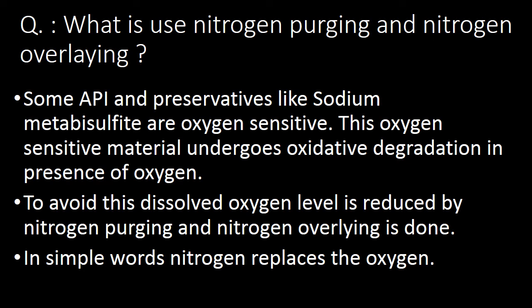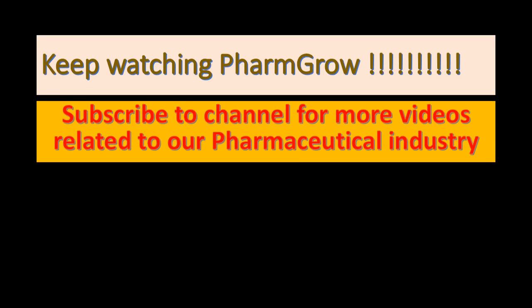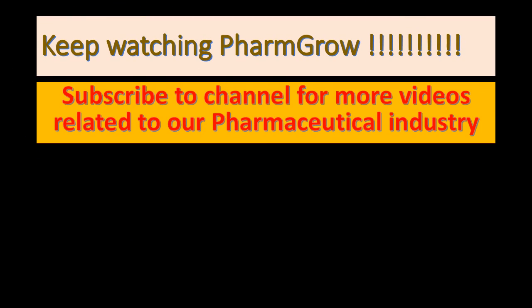What is the use of nitrogen purging and nitrogen overlaying? Some APIs and preservatives like sodium metabisulphite are oxygen-sensitive. These oxygen-sensitive materials undergo oxidative degradation in the presence of oxygen. To avoid this, dissolved oxygen level is reduced by nitrogen purging, and nitrogen overlaying is done — in simple words, nitrogen replaces the oxygen.